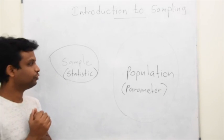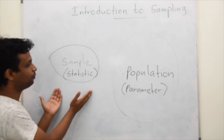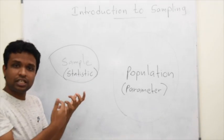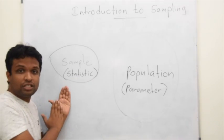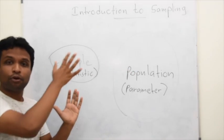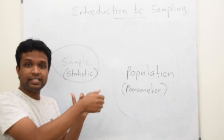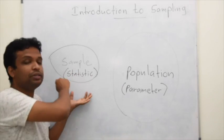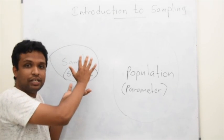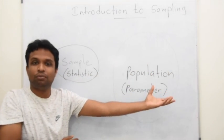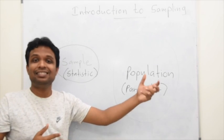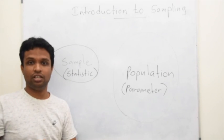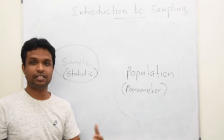Why do we take a sample? We take a sample to describe about a population — we don't take samples just to describe the sample itself. We need to describe about the population, and that process we call inferencing. Inferencing means we have sample data, and by using sample data, we are talking about the population. The statistical techniques used for this we call inferential statistics.